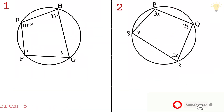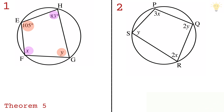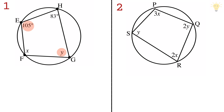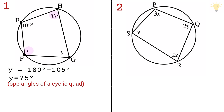Theorem 5 states that the opposite angles of a cyclic quadrilateral add up to 180 degrees. A cyclic quadrilateral is a four-sided shape with all four corners lying on the circumference of the circle. In example 1, to find y we subtract 105 from 180, giving 75 degrees. To find x we subtract 83 from 180, giving 97 degrees.